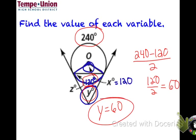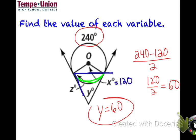For z: this angle is intercepting the arc we found to be 120 degrees. Since z is an inscribed-style angle with the vertex on the circle, z = 120 / 2 = 60 degrees.